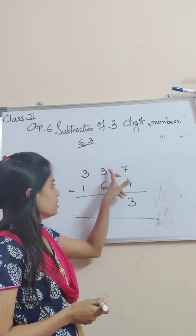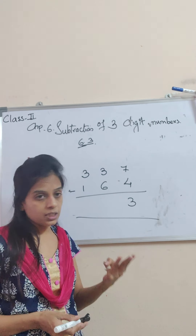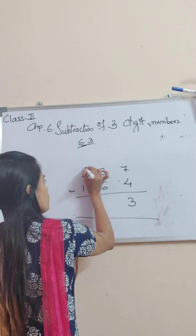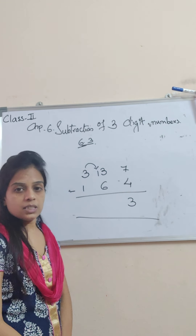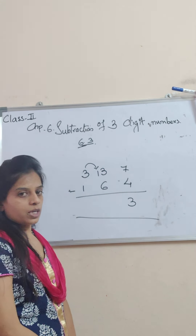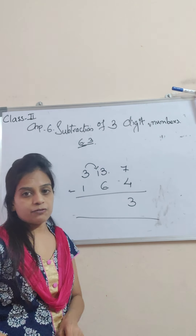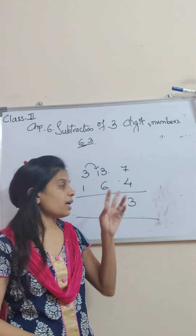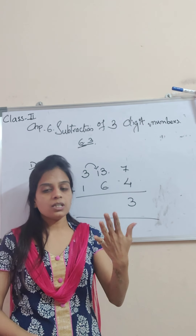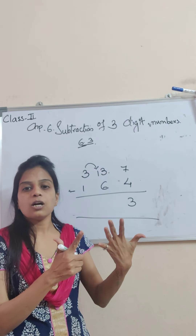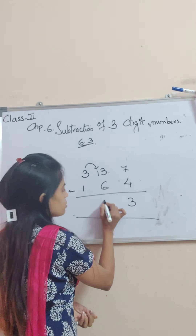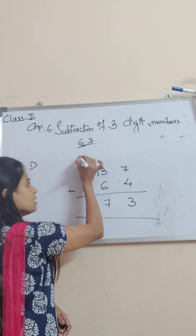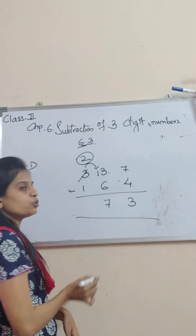Now, coming to next: 3 minus 6. You cannot take out 6 from 3, as the upper number is small. So you will borrow 1 from hundreds place. Now, 13 minus 6. After 6, count till 13: 7, 8, 9, 10, 11, 12, 13. How many fingers? 7. So I am going to write here 7. Now 3 mein se hamne 1 yaha de diya, so 3 kaat ke kya ban jayega? 2.